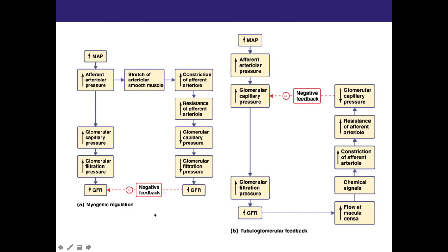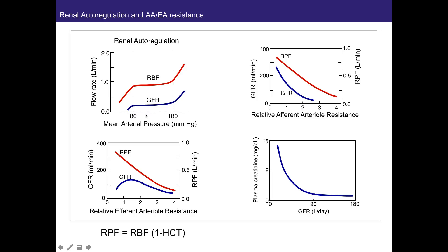Mean arterial pressure can range from 80 to 180 mmHg, and your GFR stays fairly constant because of these autoregulatory mechanisms — myogenic regulation being one of them. This is how the kidneys keep GFR constant even in the face of huge changes in mean arterial pressure.